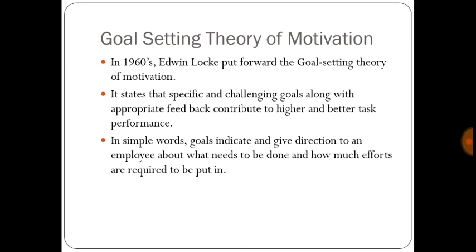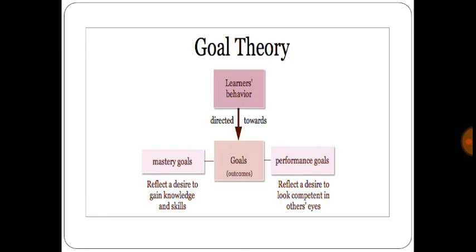The seventh theory is goal-setting theory of motivation. In the 1960s, Edwin Locke put forward the goal-setting theory. It states that specific and challenging goals along with appropriate feedback contribute to higher and better task performance. In simple words, goals indicate and give direction to an employee about what needs to be done and how much effort is required. Whenever learners work toward a goal, they set performance goals or mastery goals.